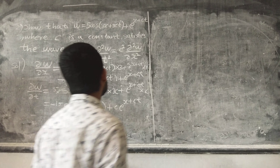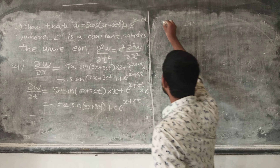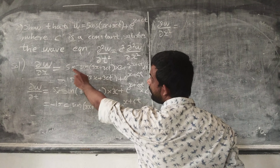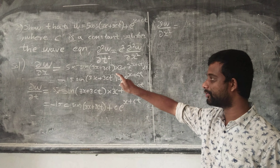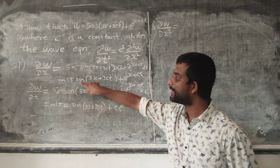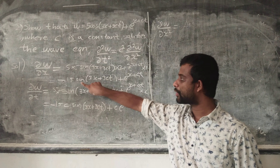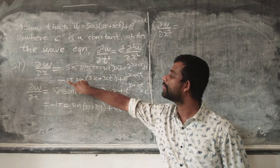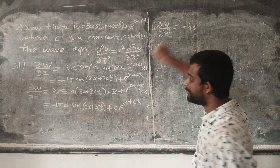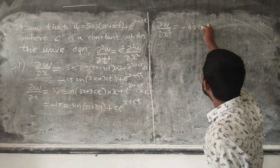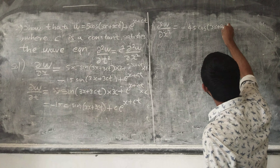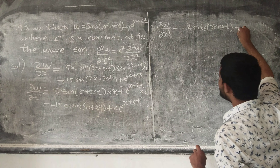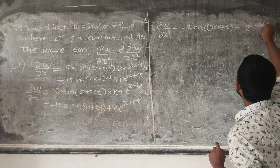Now computing dou square w by dou x square: differentiating dou w by dou x with respect to x gives minus 15 into 3 cos of (3x + 3ct), which is minus 45 cos of (3x + 3ct), plus e raised to (x + ct).